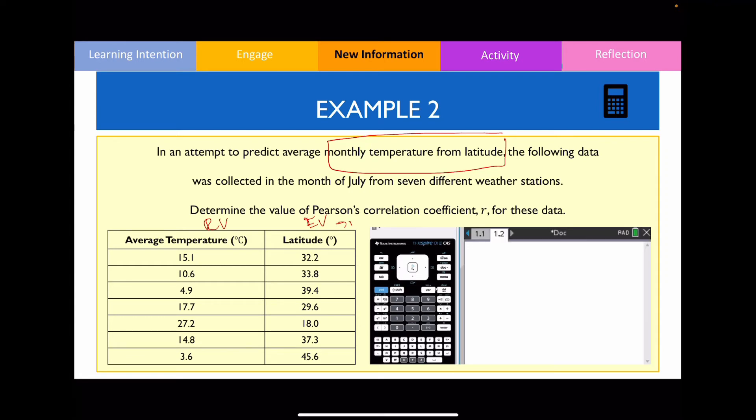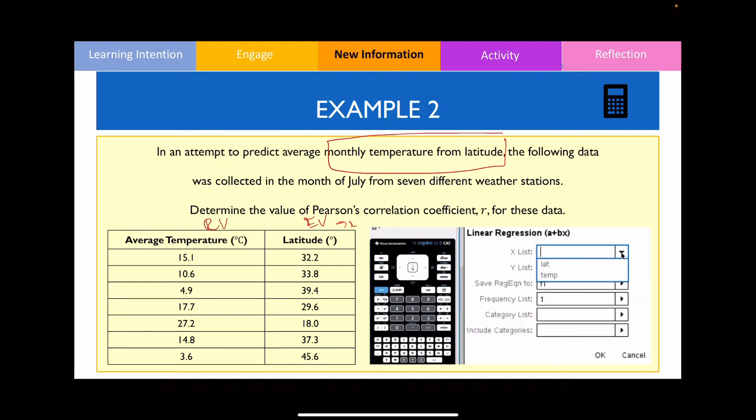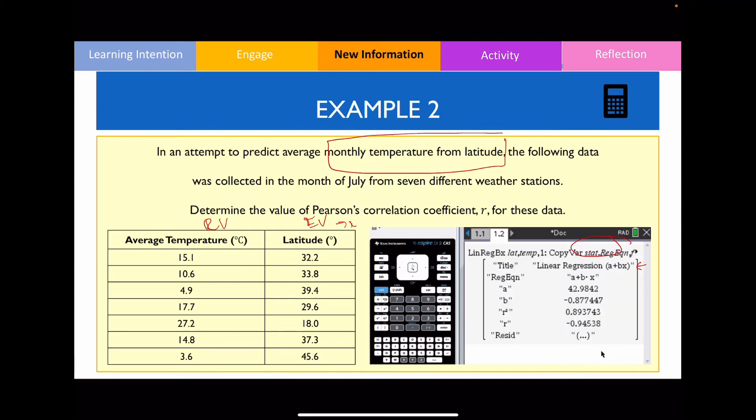So that's going to be plotted for my x-axis. So again, I go statistics, stat calculations, linear regressions. I put latitude over here and then I'm going to put average temperature here, and therefore I'm going to get an r value that's equal to negative 0.94538. But if I was to round this to four decimal places, this is what I'll be getting.